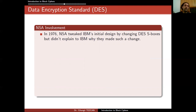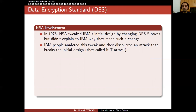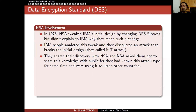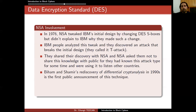Regarding NSA's involvement: in 1976, NSA tweaked IBM's initial design by changing the S-boxes but didn't explain why. IBM analyzed the change and discovered an attack that breaks their initial design, calling it the T-attack. They shared their discovery with NSA, and NSA asked them not to share it publicly — because NSA had known this attack for some time and had been using it to listen to other countries' communications.